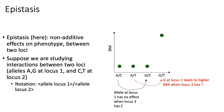So locus one has no effect when there's a C at locus two. On the other hand, if you look at columns two and four, compared by the red arrow, when there's a T at locus two, then an A at locus one leads to low BMI and a G at locus one leads to high BMI. So when there's a T at locus two, there is a difference between having an A or G at locus one. This is a basic example of epistasis: when there's a T at locus two there's an effect of locus one, but when there's a C at locus two there's no effect of locus one.